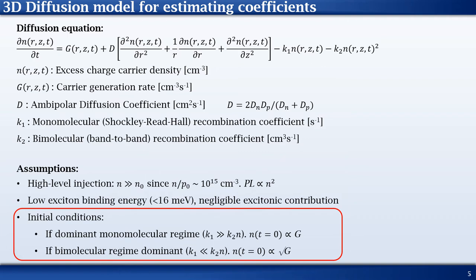Lastly, as the generation term is set to 0, we must make certain assumptions regarding the initial carrier population and G. We are either in a dominant monomolecular regime where N is proportional to G, or rather in a dominant bimolecular regime where N is proportional to the square root of G.